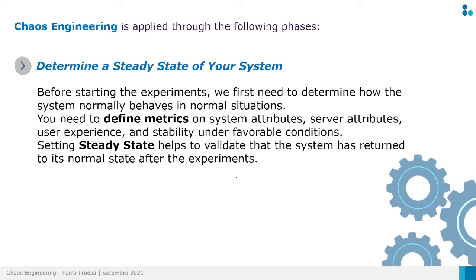The first step is the steady state of your system. We need to determine how the system normally behaves in normal situations before starting all the experiments. We define metrics on system attributes, server attributes, and user experiences. We establish these metrics under normal conditions of the system, and then we have the steady state based on these metrics.